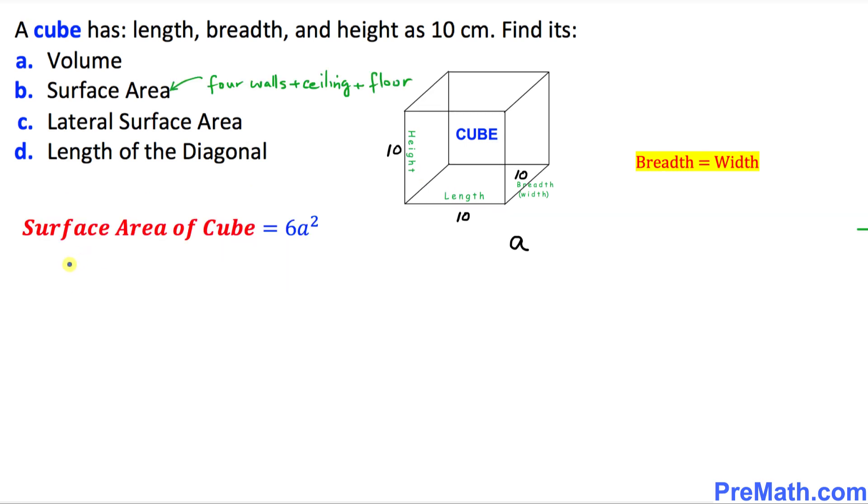Now we are going to calculate the surface area of this given cube. Keep in mind that surface area means we are talking about these four walls surrounding, plus the ceiling and floor. That's six sides. The formula is 6a².